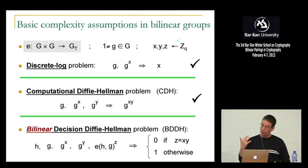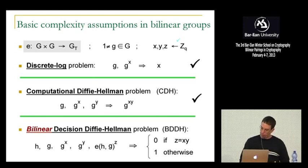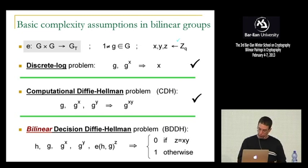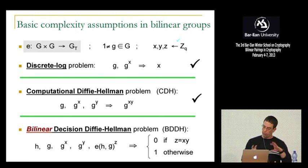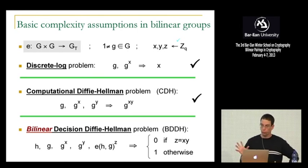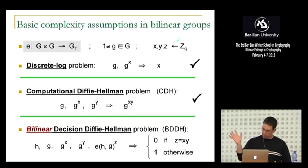Since DDH is easy in bilinear groups, we introduce the Bilinear Decision Diffie-Hellman assumption, BDDH. It's similar to DDH but you add one more element H and ask to distinguish pairing(H, G) from a random element in the target group. Instead of indistinguishability in the source group, BDDH asks for indistinguishability in the target group. BDDH is used in many, many constructions and we'll use it throughout the day.